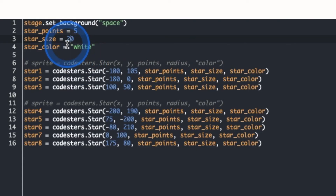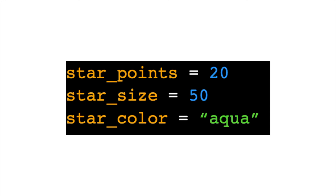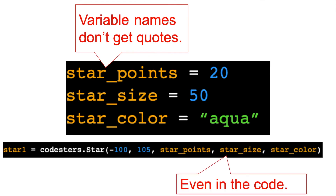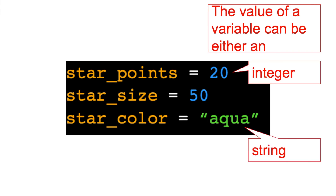That's a good way of using variables. I can use a variable anywhere in my program, and I can change the value for the variable at any time. There are two things to remember about variables. First, variable names don't get quotation marks — even though they look like a string, they don't get quotation marks, even when you use them in the code. Notice that star_points, star_size, and star_color do not have quotation marks. The second thing to remember is that the value of a variable can be either an integer or a string.